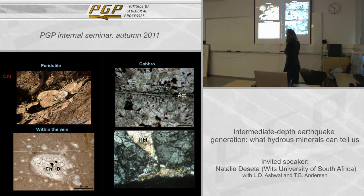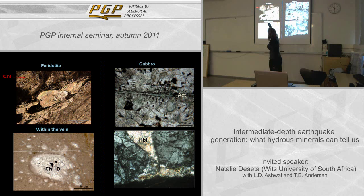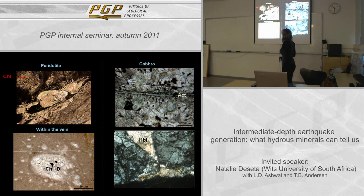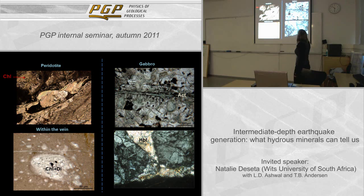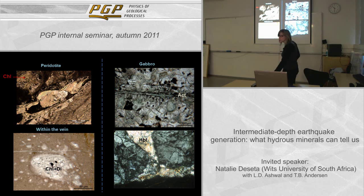Starting with the peridotite: we see a pseudotachylite vein, a transitional boundary, and wall rock material. The wall rock contains pre-existing hydrous minerals, and the pseudotachylite has started to consume this pre-existing hydrous mineralogy. We also have a chlorite and diopside aggregate that has been entrained into the melt and has started to disseminate. In the gabbro, instead of chlorite, we see actinolite and hornblende dominating in the wall rock, which get exploited by the pseudotachylite vein — the hornblende being preferentially consumed by the melt. So we know that hydrous minerals pre-existed in the pseudotachylites and were consumed by them.